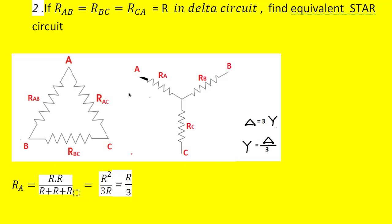To get Ra in the star form, we look at terminal A: the branches connected to it are Rab and Rac. So Ra equals Rab · Rac divided by the sum of all resistors in the delta form — that is Rab + Rbc + Rac. Substituting: R·R divided by R + R + R gives R² divided by 3R, which simplifies to R/3.